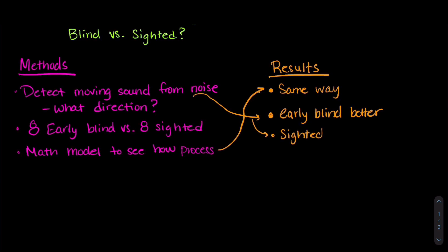The sighted participants could only detect moving sound and figure out which direction if it was three times louder than the background noise. And early blind participants could do this at half that volume.